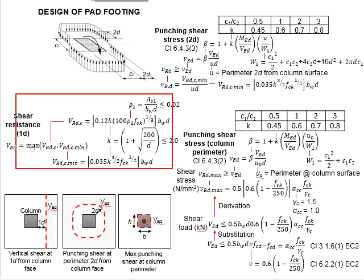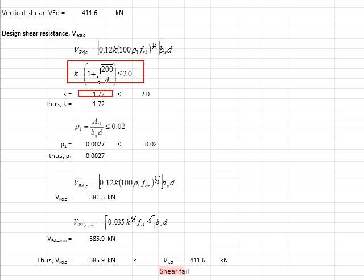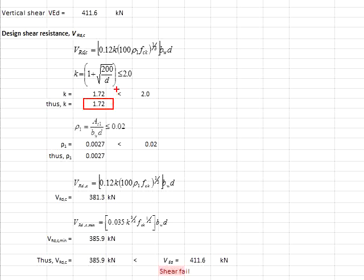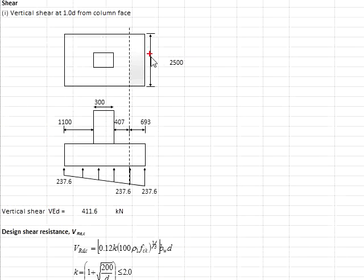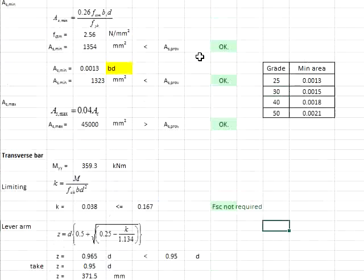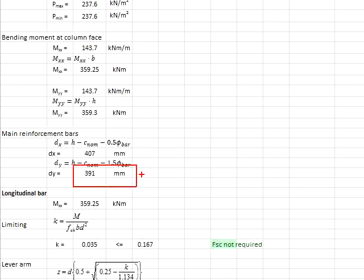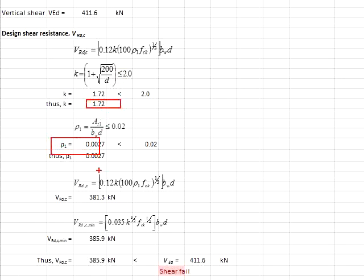Use these equations to check your shear resistance against VEd. First, find K using the formula, substituting the smaller d value. K is less than 2.0, so you use 1.72. Next, determine the area of reinforcement bar divided by B×d. The provided reinforcement area, with B equal to 2500 mm and d equal to 391 mm at the critical 1D shear plane, is substituted along with K and Rho1 into the formula.